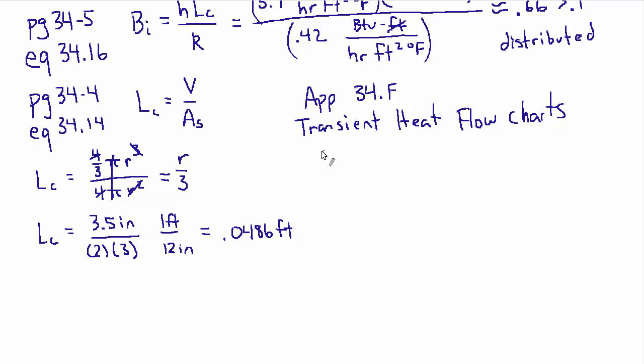If you check out the appendix specifically 34F you'll find the transient heat flow charts, specifically the one F is for solid sphere radius R sub 0. And on that chart there's actually six charts, six mini charts, and they're broken out by different ratios of R to R sub 0.